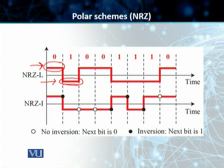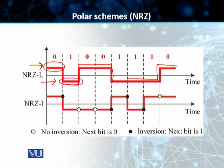As soon as it changes again to 0, we go back to positive. The next bit is 0, it stays positive. Next bit is 1, it comes to the negative voltage level. Once again we have 1, it stays the same. Then it's 0, so it changes to positive. This is our non-return to 0 level. Students, in non-return to 0 invert, the change or lack of change in the level of the voltage determines the value of the bit.